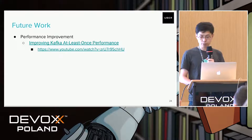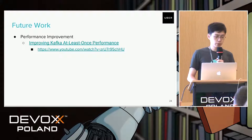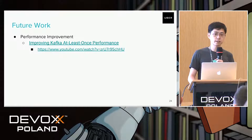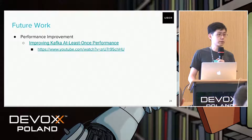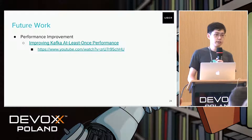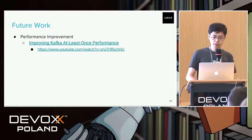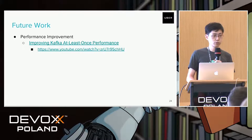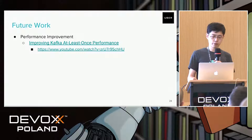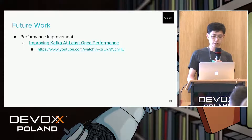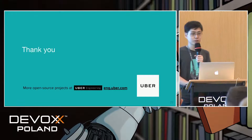For future work, we want to further improve the performance of the XDC Kafka cluster. We have already done a lot of work improving performance for our at-least-once Kafka cluster and deployed those improvements to the XDC Kafka cluster, but there is still more room to improve. There is a link to the YouTube video about the performance improvements we have already done. Thank you — do you have any questions?